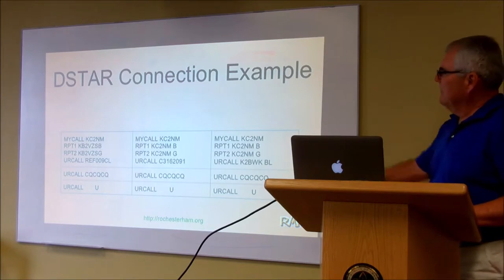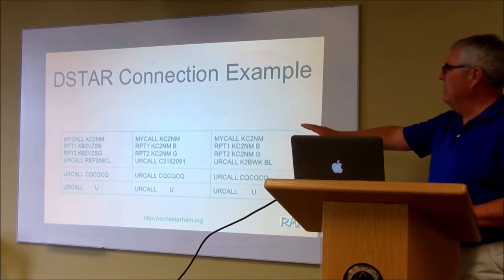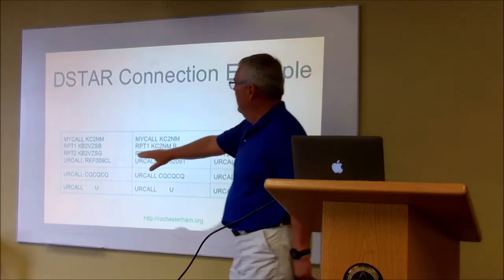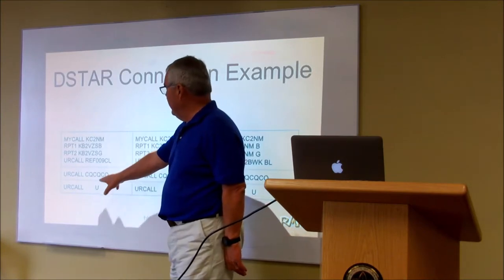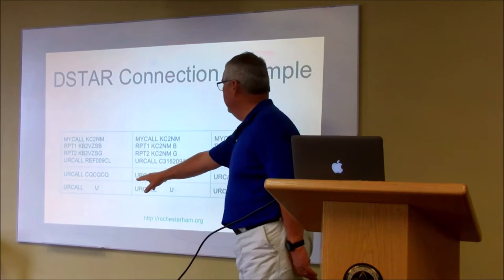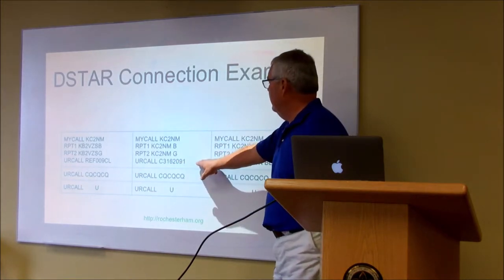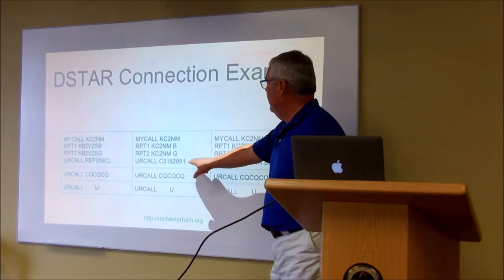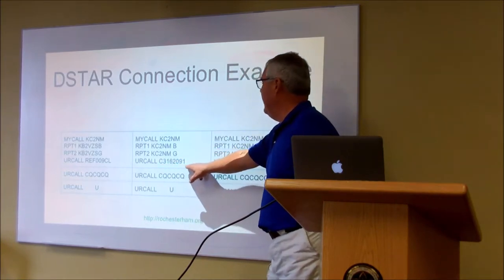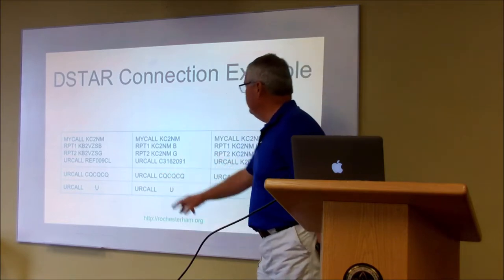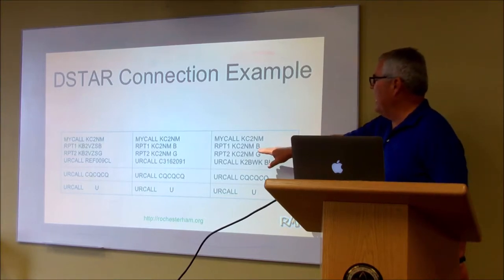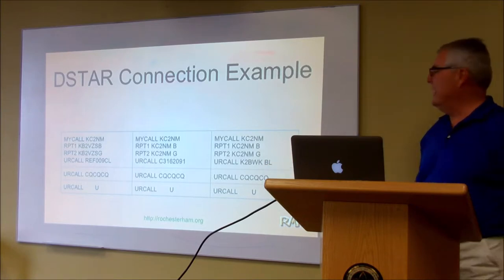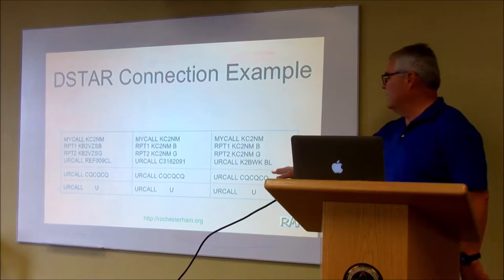Here are some examples of what I would set radio memories to for these calls. This would connect me to Reflector 9, this is what I use during my conversation, and this is how I disconnect. This is me calling using a CCS7 ID — I switch to CQCQ then disconnect. This is the example for my hotspot, with the call signs of my hotspot, connecting to the Canandaigua 440 machine. Then I would talk to somebody and disconnect. It's all connection-based.